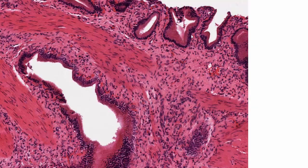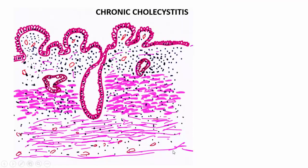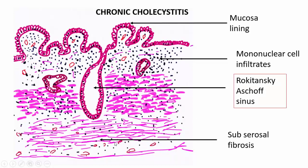The higher magnification view shows the mucosal lining columnar epithelium and the Rokitansky-Aschoff sinuses at higher magnification. Chronic inflammatory cell infiltrates — lymphocytes and plasma cells — are seen infiltrating throughout the various layers of the gallbladder. A diagrammatic representation shows the mucosal lining, mononuclear cell infiltrates, Rokitansky-Aschoff sinuses, and subserosal fibrosis.